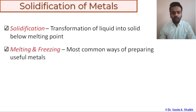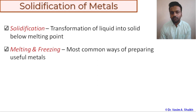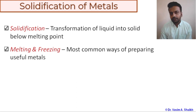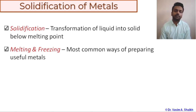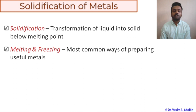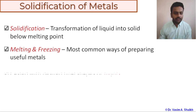Melting and freezing are the most common ways of preparing useful metals. Theoretically, the melting point and freezing point are the same. The only difference is the direction of the phase change — in melting, the phase changes from solid to liquid, and in freezing, the phase change is from liquid to solid. When we are solidifying a metal, we are basically freezing it from a liquid state to a solid state, and casting it into ingots.